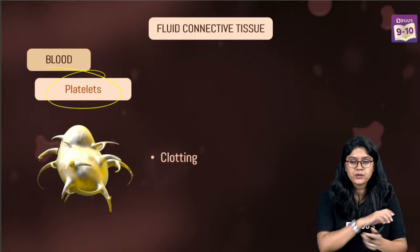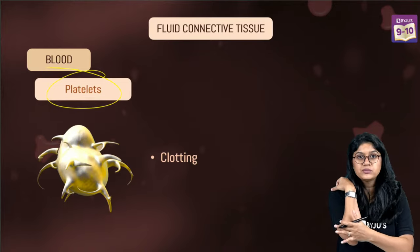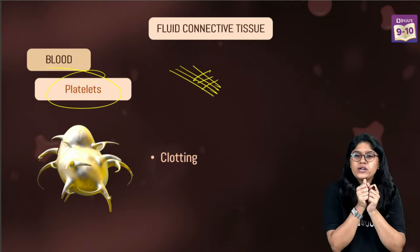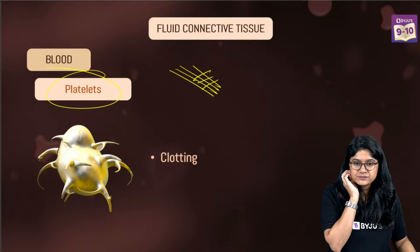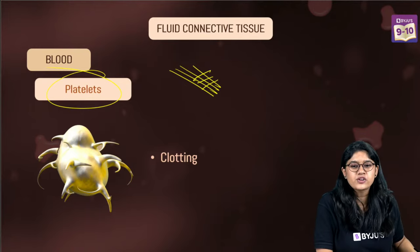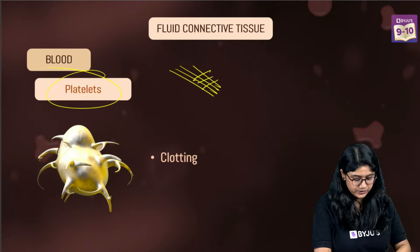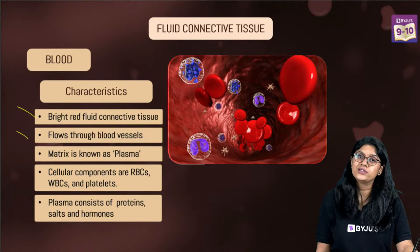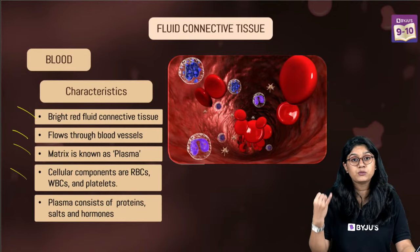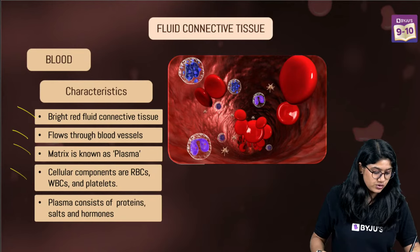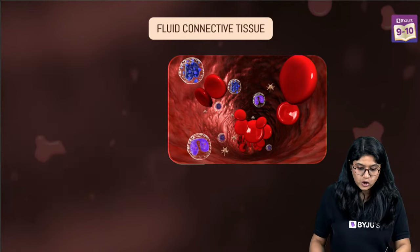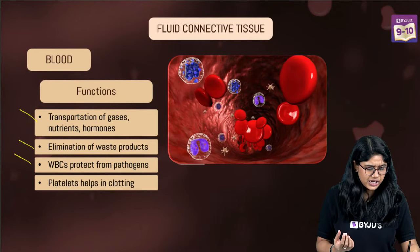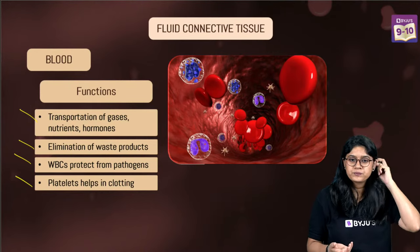The amazing platelets actually help in the clotting of the blood. If there's a cut, after some time the blood will not ooze out - the platelets will come and form a mesh-like structure holding the blood cells. Important characteristic features of blood: bright in color, flows in blood vessels, matrix is known as plasma, has WBCs, RBCs and platelets. Plasma consists of protein, salt and hormones. Functions: transportation of nutrients, removal of excess harmful gases, and helping in clotting.